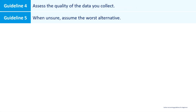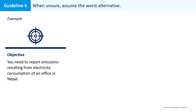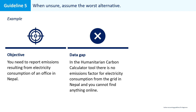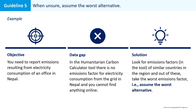The second guideline with regards to data quality is: when unsure, assume the worst alternative. When you're doubting about the data to enter, go for the worst available data option. For example, imagine your organization is operating in Nepal, consuming electricity from the grid, but in the humanitarian carbon calculator tool there is no emissions factor for electricity from the grid in Nepal and you can't find anything online. In this case, you could look for emissions factors of similar countries in the region and take the worst emissions factor, using that for Nepal — assuming the worst alternative.